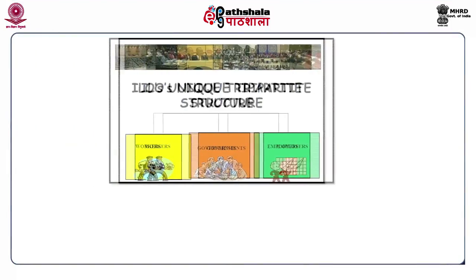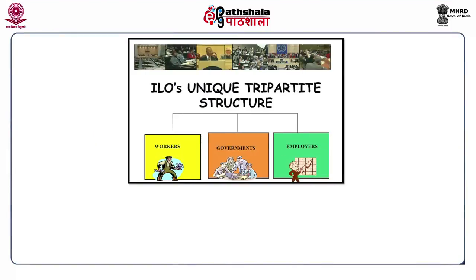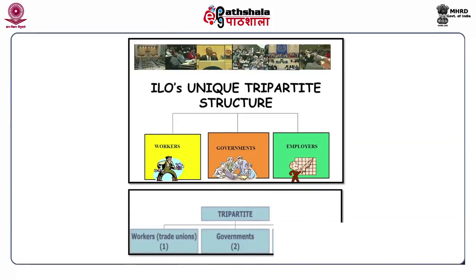All three groups are represented on almost all the deliberative organs of the ILO and share responsibility in conducting its work. ILO has a very unique tripartite structure, which consists of three important bodies — workers, governments and employers. In its truly tripartite nature, workers represent one group, government has two representatives, and employers have one representative.